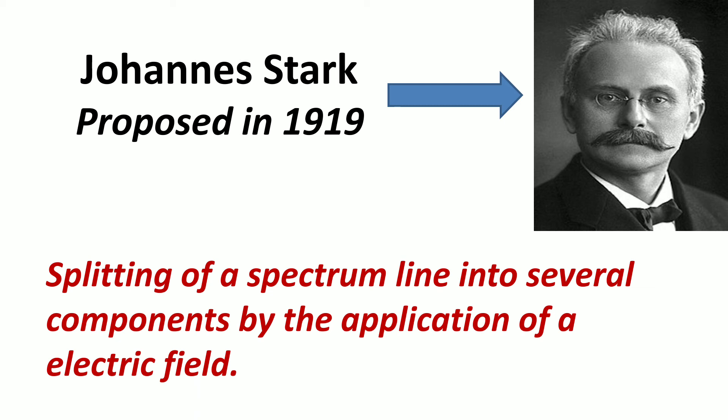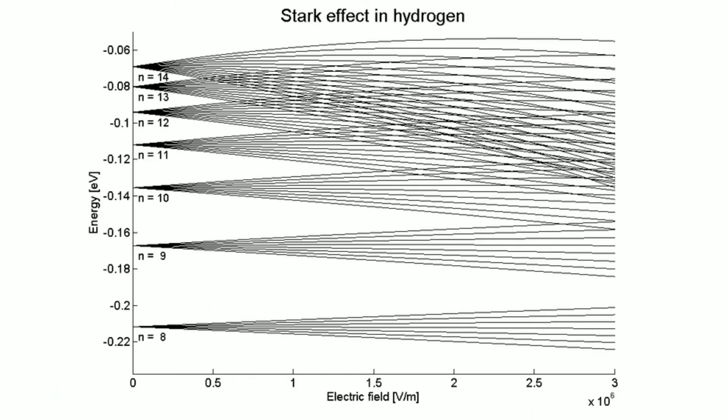The Stark effect may also include both shifting and splitting of spectral lines. The electric field first polarizes the atom and then interacts with the resulting dipole moment. This is the Stark effect in the hydrogen atom — it includes both shifting and splitting of spectral lines, and the atom polarizes first and then interacts with the resulting dipole moment.